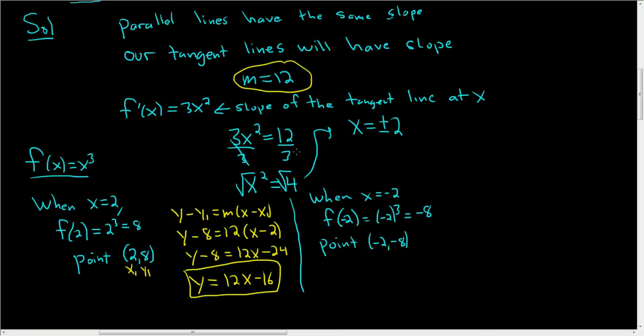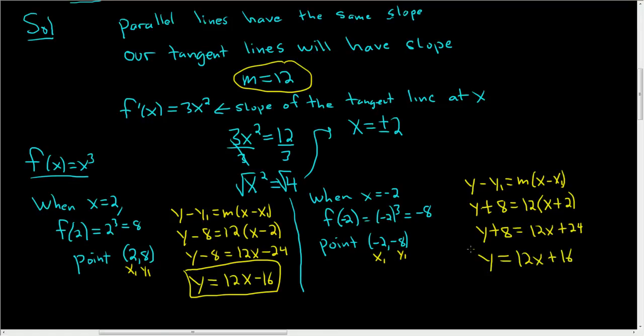To finish, we'll use the point-slope form again: y - y₁ = m(x - x₁). So y - (-8) = 12(x - (-2)). With minus and minus making plus, we get y + 8 = 12(x + 2). Distributing: y + 8 = 12x + 24. So y = 12x + 16. And that's our other tangent line.